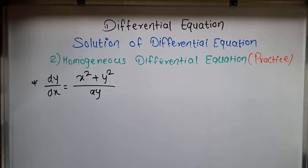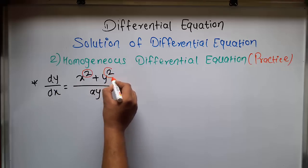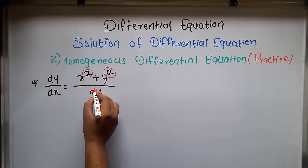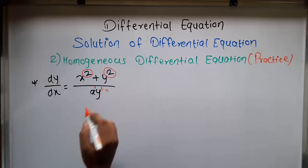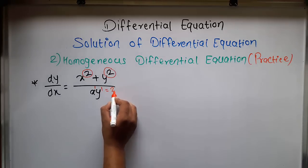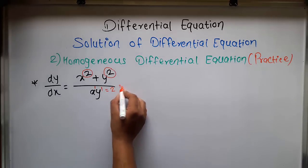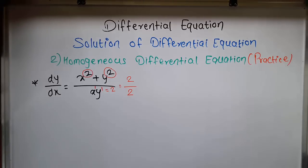In this equation, how do we find the homogeneous equation? In the numerator, x has degree 2 and y has degree 2. In the denominator, x has degree 1 and y has degree 1. When two variables are multiplied, their degrees get added, so the denominator also has degree 2. Since the degree in the numerator and the degree in the denominator are the same, this equation is called a homogeneous differential equation.